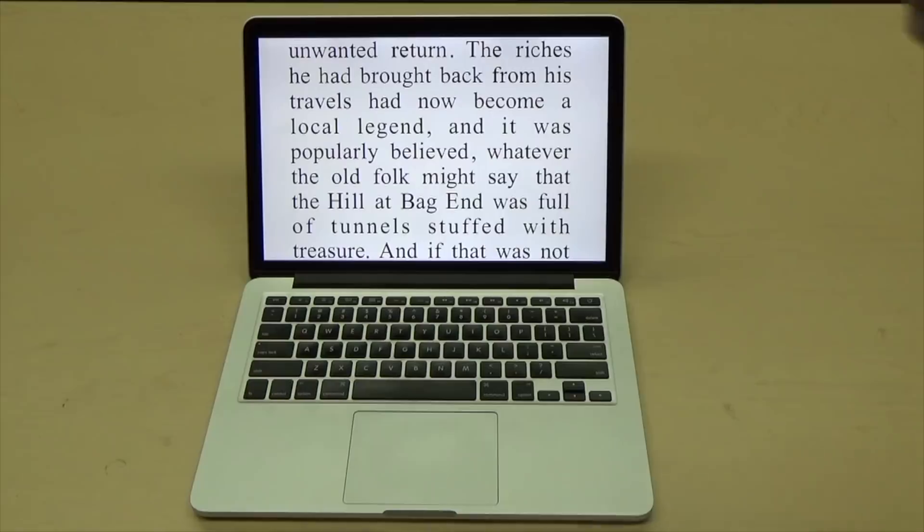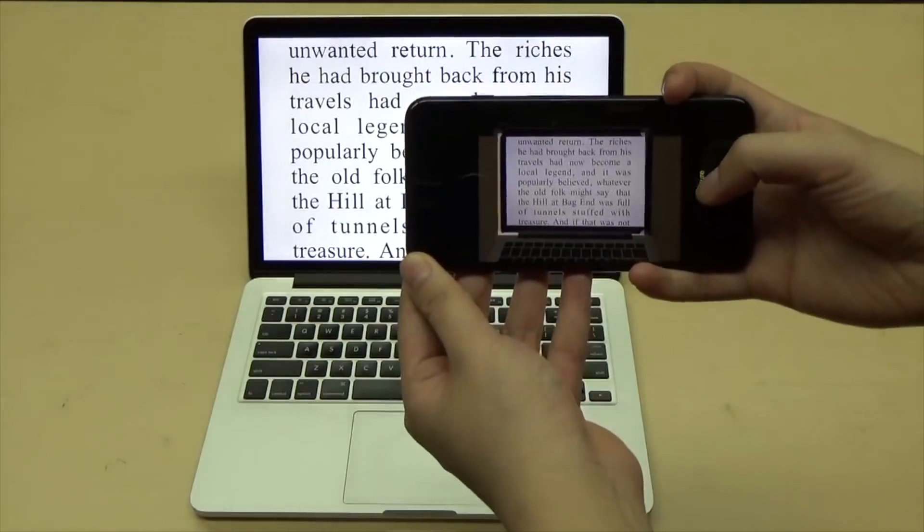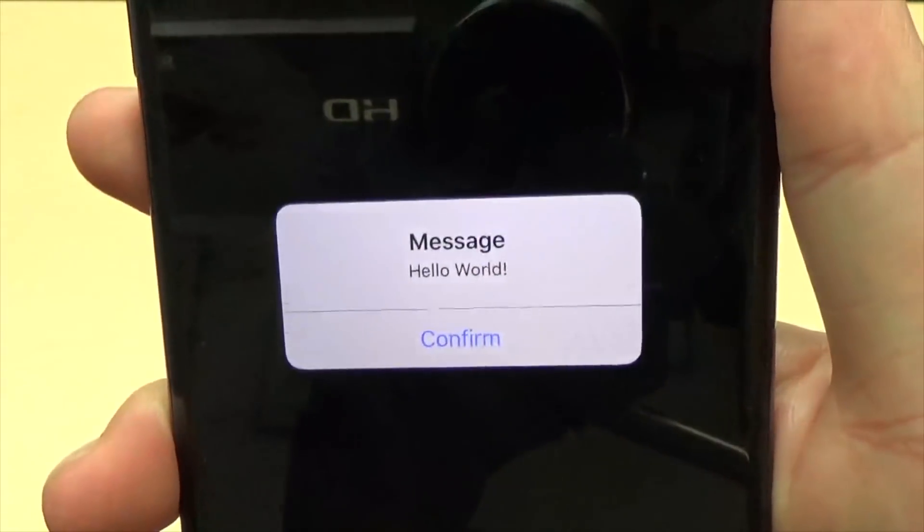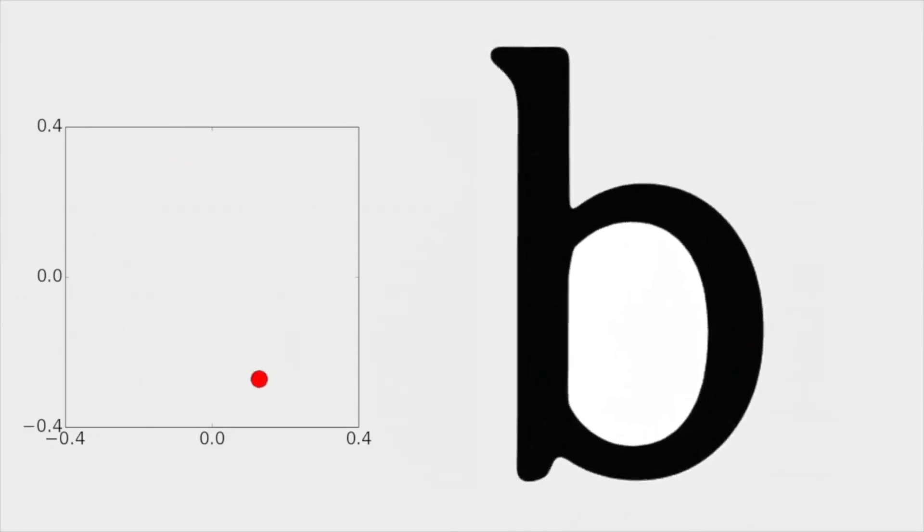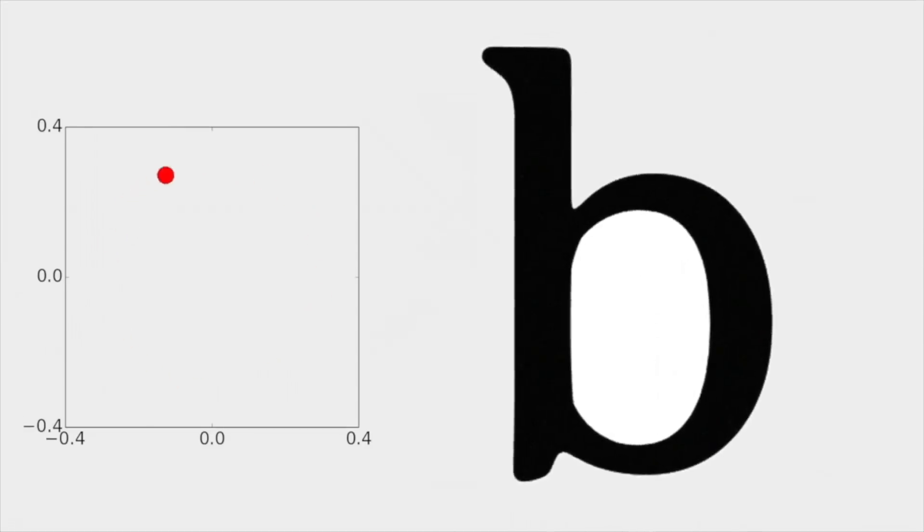We present FontCode, a new information embedding method for text documents that allows users to embed and later retrieve messages. Our key idea is to perturb the glyph of each letter in the text document on font manifolds.